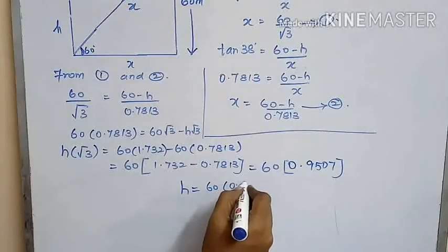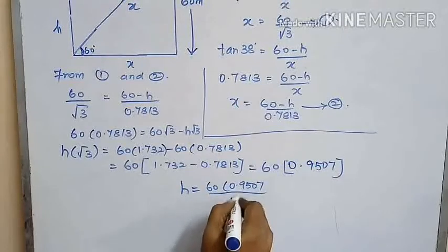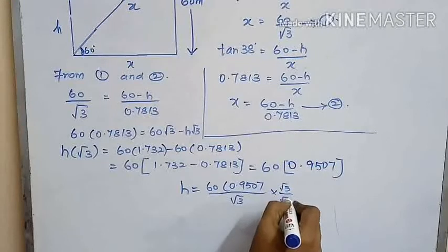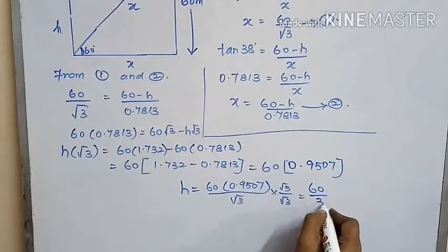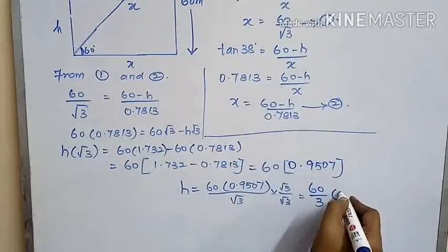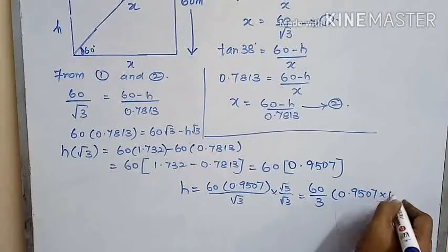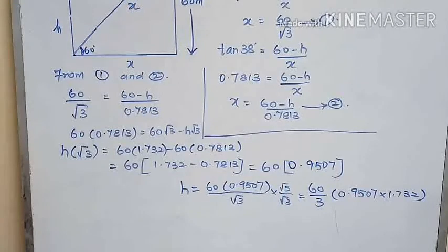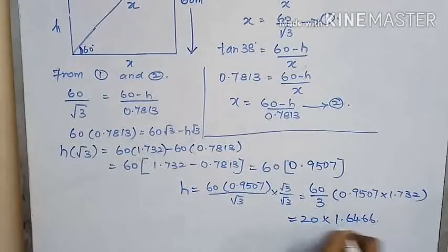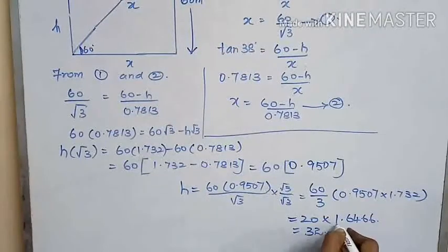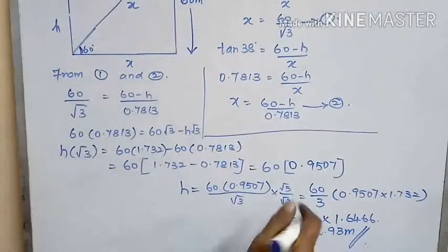Now H = 60 × 0.9507 divided by √3. Multiplying and dividing by √3, we get (60 / 3) × 0.9507 × 1.732, which equals 20 × 0.9507 × 1.732.